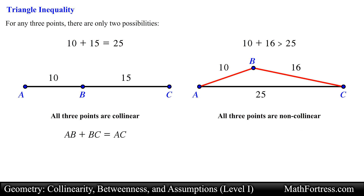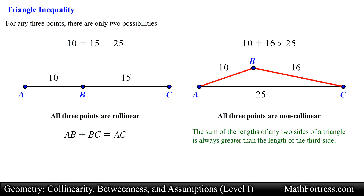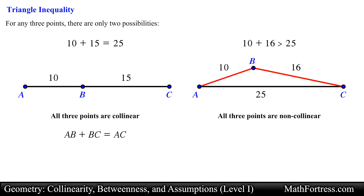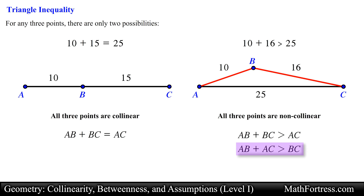This is an example of an important characteristic of triangles called the triangle inequality. The sum of the lengths of any two sides of a triangle is always greater than the length of the third side. This generates three separate inequalities: AB + BC > AC; and BC + AC > AB.